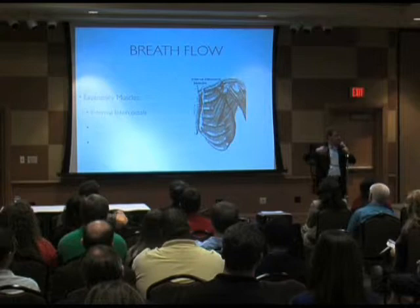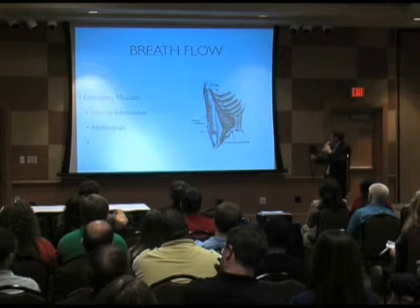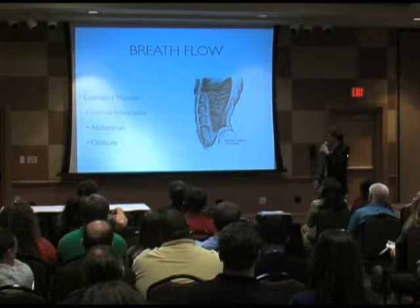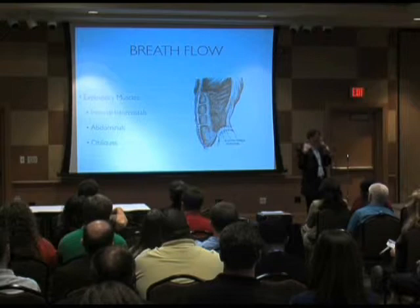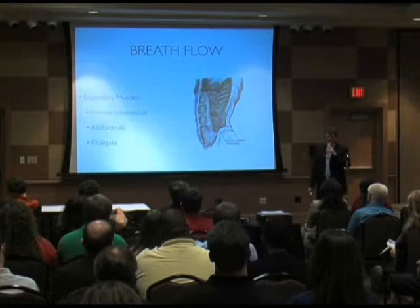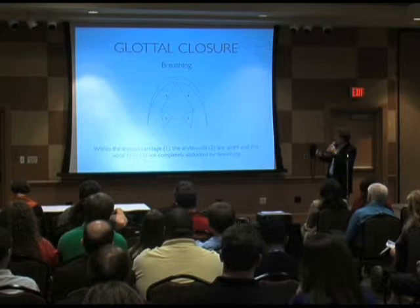For expiration, we use the internal intercostals, which contract the ribcage like a bellows and push air out. We also use the abdominal muscles, which contract and draw in with the same effect. There are also the oblique muscles on the side that help do the same thing. There are other muscles involved, but these are the primary ones.